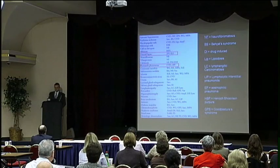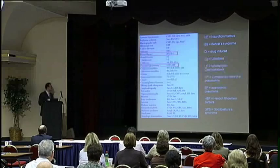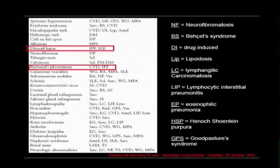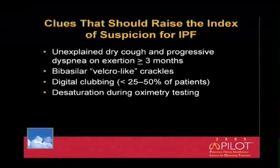This slide is from a comprehensive book on interstitial lung disease by Schwartz and Talmadge King. It shows all the physical findings seen across the various interstitial lung diseases. Since this talk is primarily focused on IPF, I've outlined the findings relevant to IPF, which include discoid lupus and Raynaud's phenomenon — although those are also common in collagen vascular diseases. These are some of the clues that should raise your suspicion for IPF.